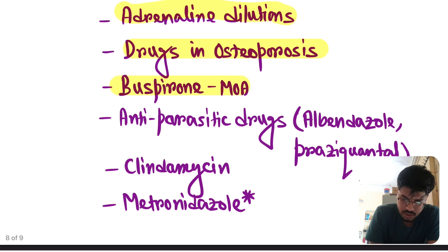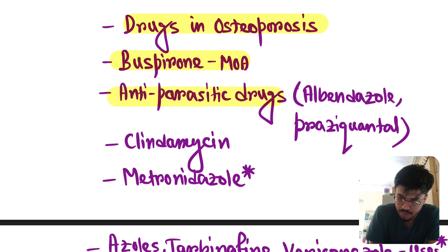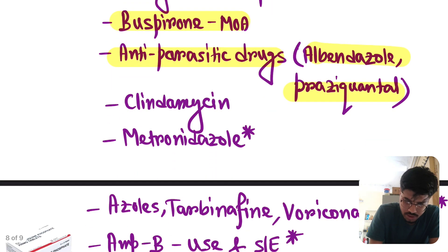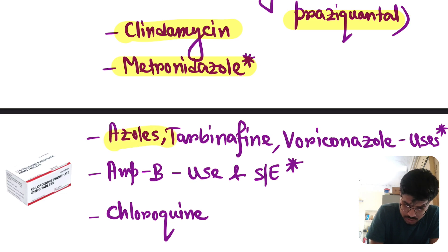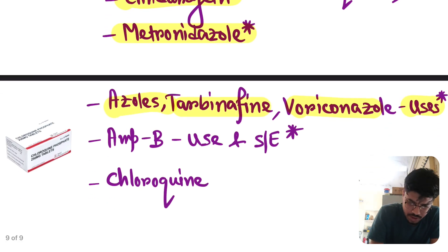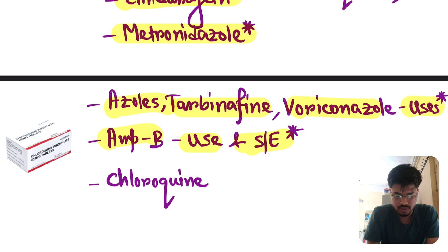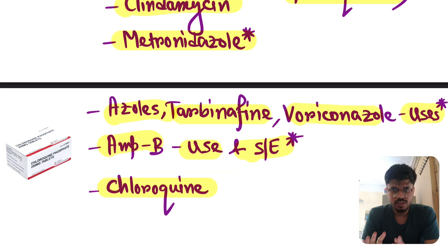Buspirone, mechanism of action. Anti-parasitic drugs. Albendazole, praziquantel. In which infection albendazole is used? In which infection praziquantel is used? You have to read them carefully. Clindamycin, metronidazole. Important. Azoles. Terbinafine, voriconazole. Uses and side effects. Amphotericin B. Uses and side effects. Chloroquine. So this is all about the important topics in pharma.